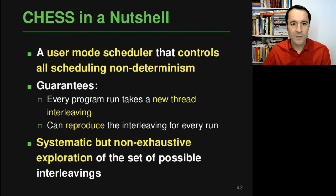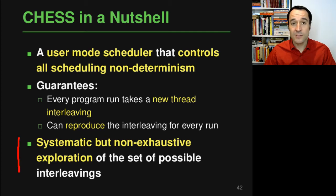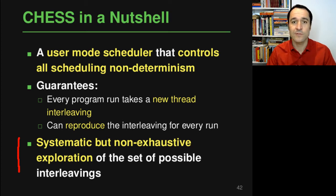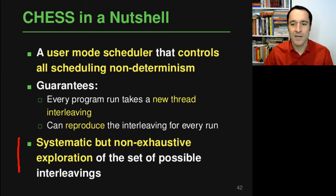The way this works is through systematic but non-exhaustive exploration, which means CHESS looks at the set of possible interleavings and systematically tries one after the other, without attempting to try all of them, because for realistic programs there are more interleavings than you can reasonably try in the time typically available for testing.